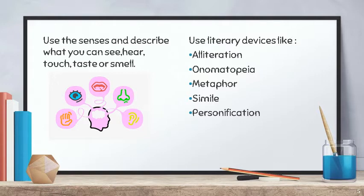Onomatopoeia is a word that describes a sound and actually mimics the sound of the object or action it refers to when it is spoken. Like 'hee-haw.'